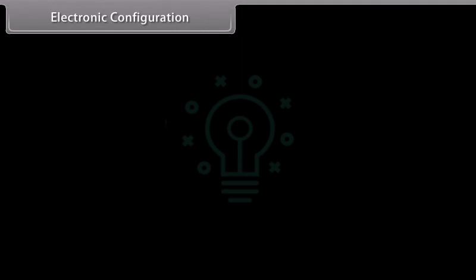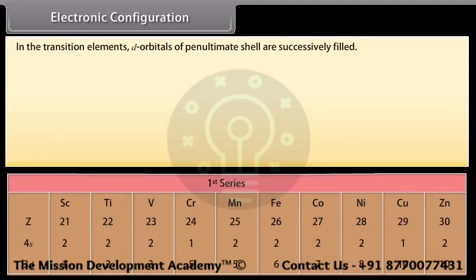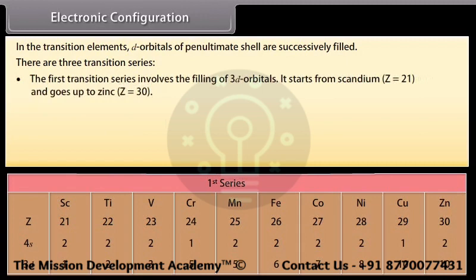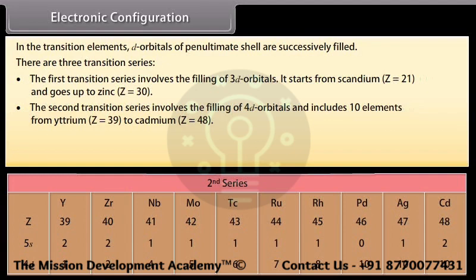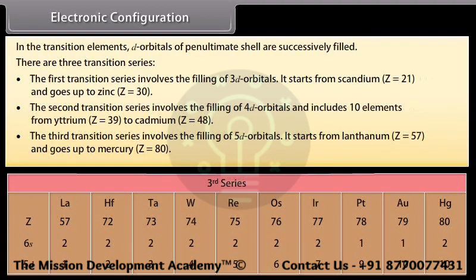In the transition elements, D-orbitals of the penultimate shell are successively filled. There are three transition series. The first transition series involves the filling of 3D orbitals, starting from scandium and going up to zinc. The second transition series involves the filling of 4D orbitals and includes 10 elements from yttrium to cadmium. The third transition series involves the filling of 5D orbitals, starting from lanthanum and going up to mercury.